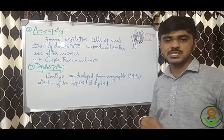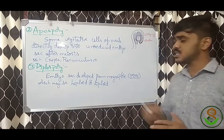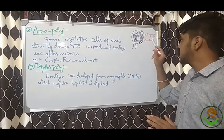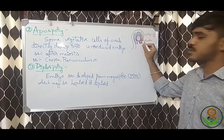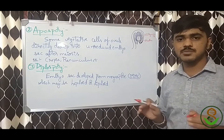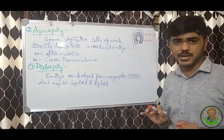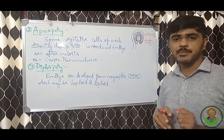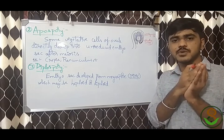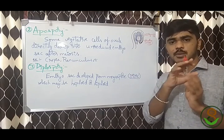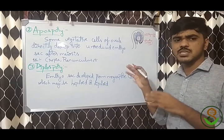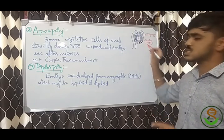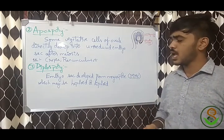Next is apospory. In adventive embryony, nucellus or integuments develop directly into embryo. But in apospory, these vegetative cells of the ovule — nucellus and integuments — develop into an embryo sac instead. Normally the embryo sac is haploid, but here it is diploid because these are 2N vegetative cells. Examples of apospory are Crepis and Ranunculus.